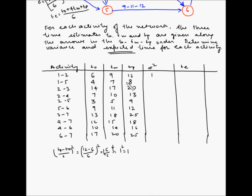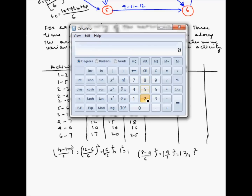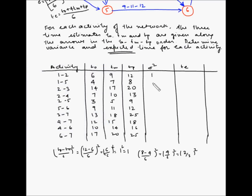For the second activity (1-5): (8 minus 4) divided by 6, squared. That is (4/6) squared, or (2/3) squared. Using a calculator, 2 divided by 3 squared gives 0.44. For the third activity (2-3): (20 minus 14) divided by 6, squared. 20 minus 14 is 6, divided by 6 is 1, and 1 squared equals 1.